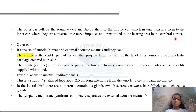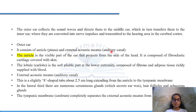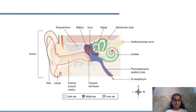Now talking about the outer ear — what exactly are its parts? It consists of an auricle, that is pinna, and an external acoustic meatus, also known as the auditory canal. So the two basic parts are the auricle (also known as pinna) and the external acoustic meatus (auditory canal).